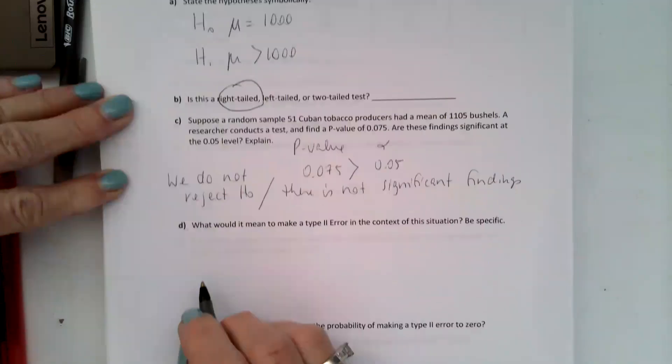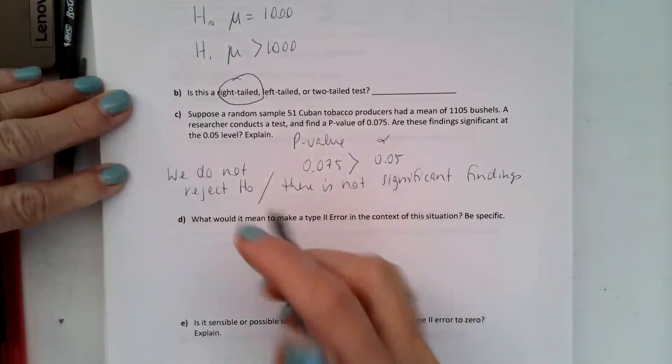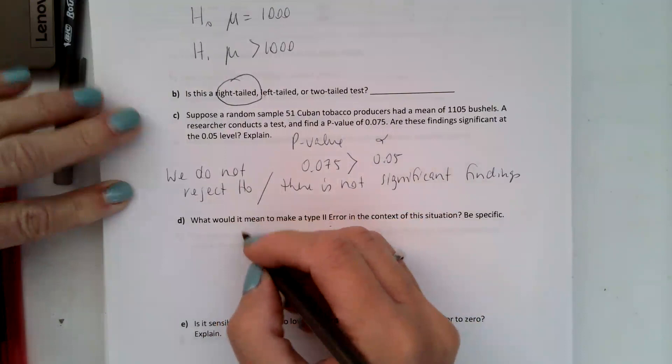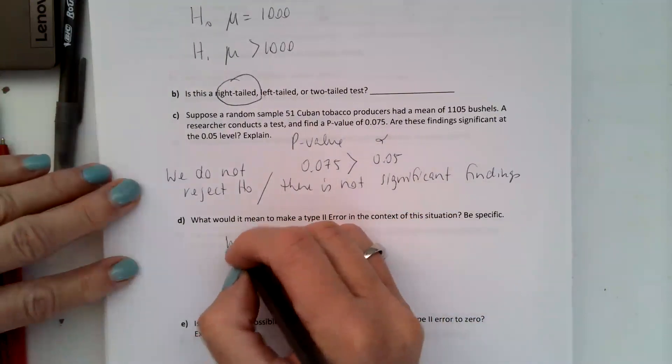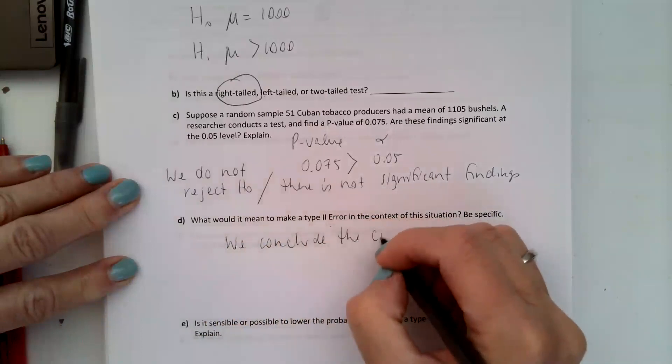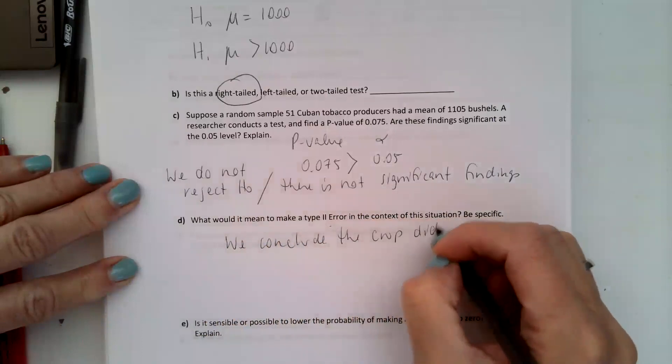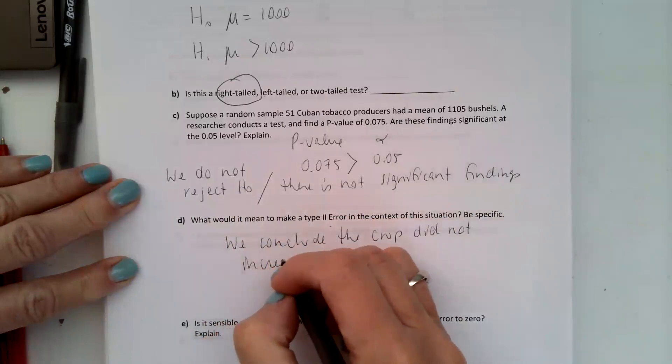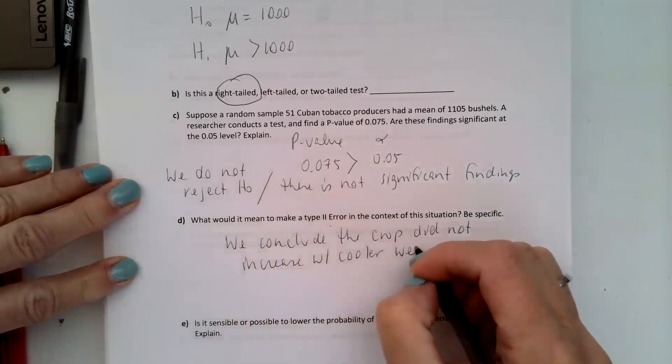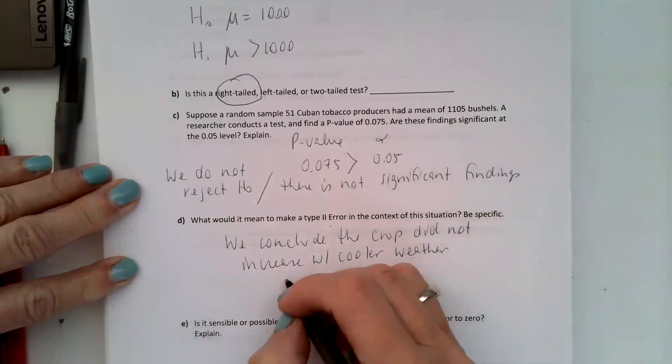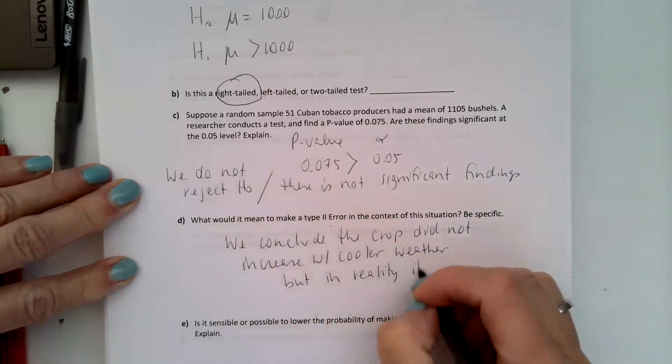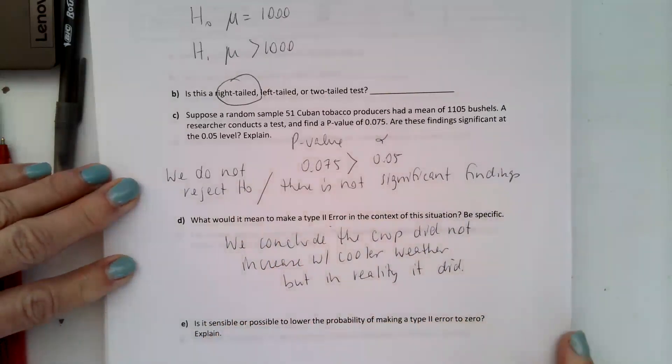So what would it mean to make a type 2 error? So we did not reject H0, which means we conclude the crop did not increase with cooler weather, but in reality it did. That would be a type 2 error.